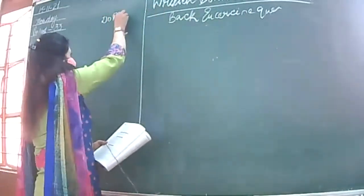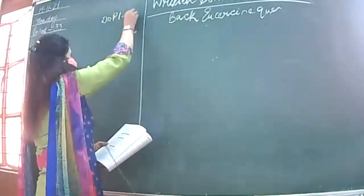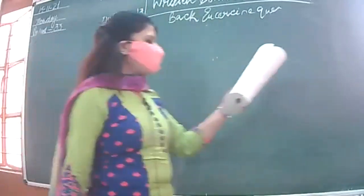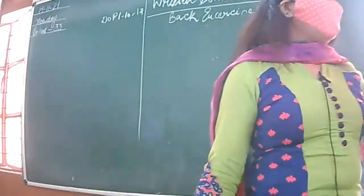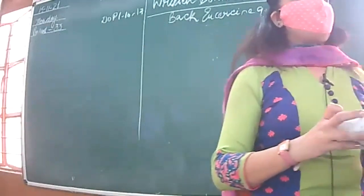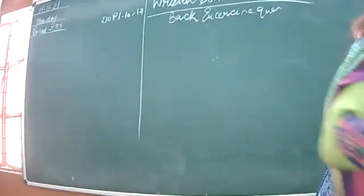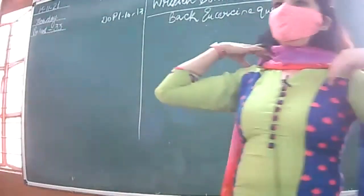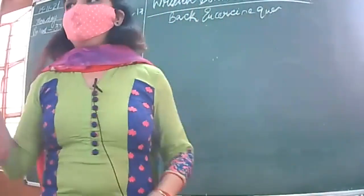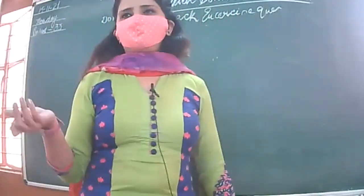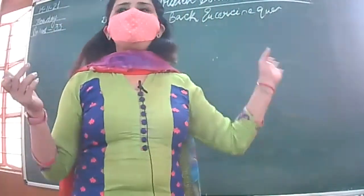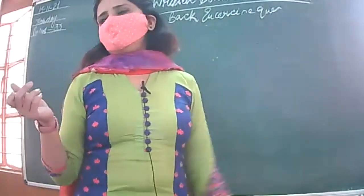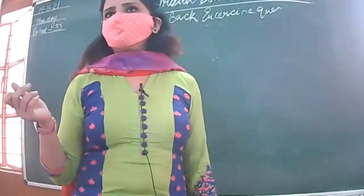The date of purchase is 1st October 2017. He paid one fourth of the payment, and he has to pay the balance in one month. You have to tell me the entry for 1st October. Raise your hand and give me the general entry, then I will post it on the board.